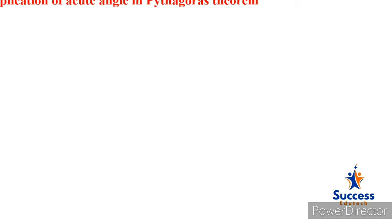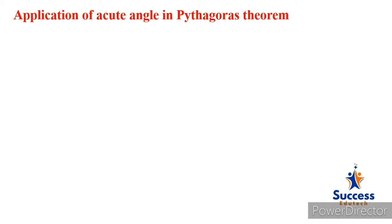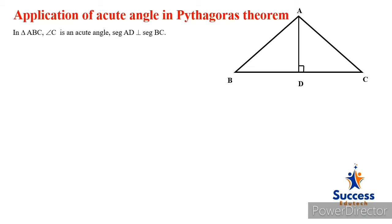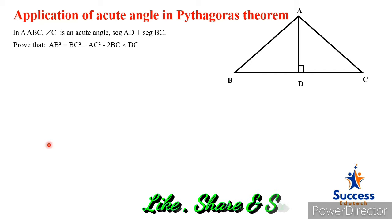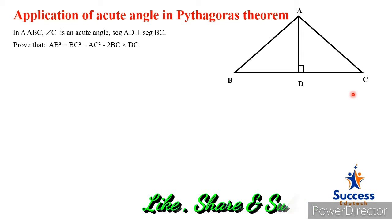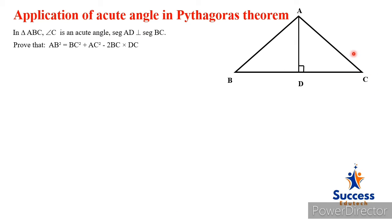First one is application of acute angle in Pythagoras theorem. The statement we have to prove: in a triangle ABC, angle C is an acute angle. Angle C is an acute angle, meaning less than 90 degrees. Obtuse angle means greater than 90 degrees. So here, angle C is clearly an acute angle.